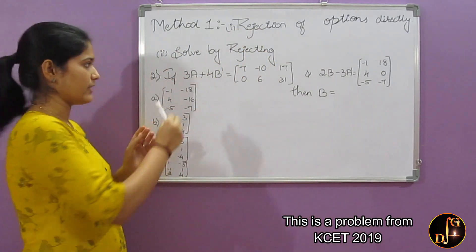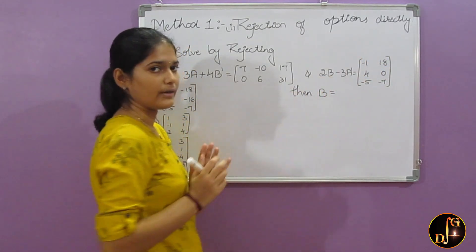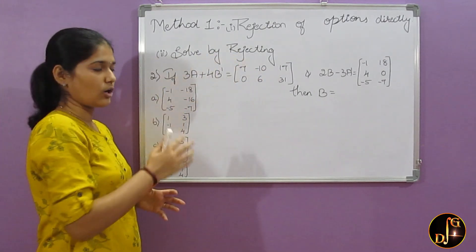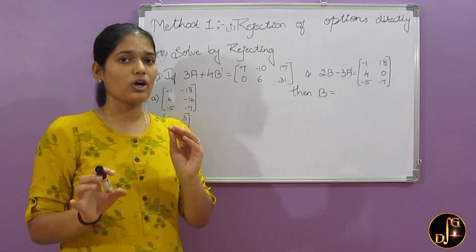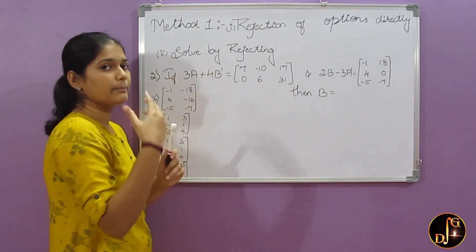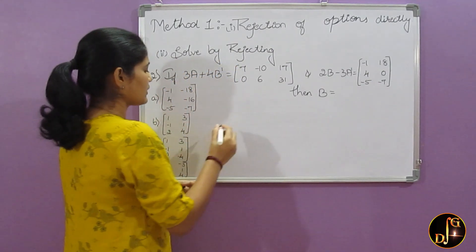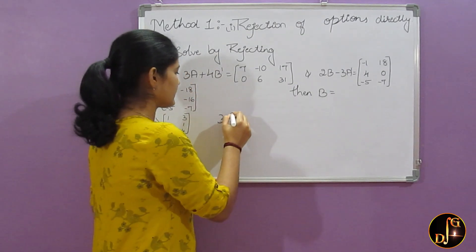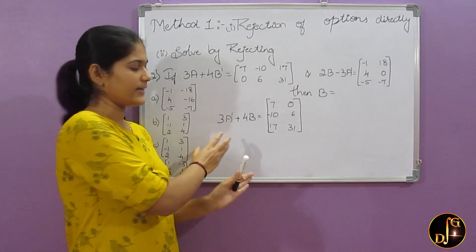Here is another example. They have given: if 3A + 4B' is equal to this matrix and 2P - 3A' is equal to this matrix, then we have to find B. In this problem, we cannot reject any of the options directly by looking at it, so we have to go for solving by rejecting the options. We have to solve only the steps that are needed. In the equation 3A + 4B', B' is B transpose. Since we have B directly in the other equation, we have to convert B transpose to B by taking the transpose of the first equation. Taking transpose: (A + B) transpose = A transpose + B transpose, so this becomes 3A' + 4B, which is the transpose of that matrix.